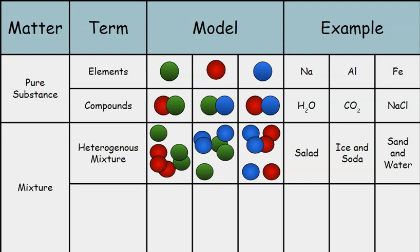So, let's talk about salad. You can distinctly tell that it is made of different components: the lettuce, the cheese, the tomato. You can tell that there's different components of the salad. Same with ice and soda. You can tell that there's ice and there's soda in that mixture.